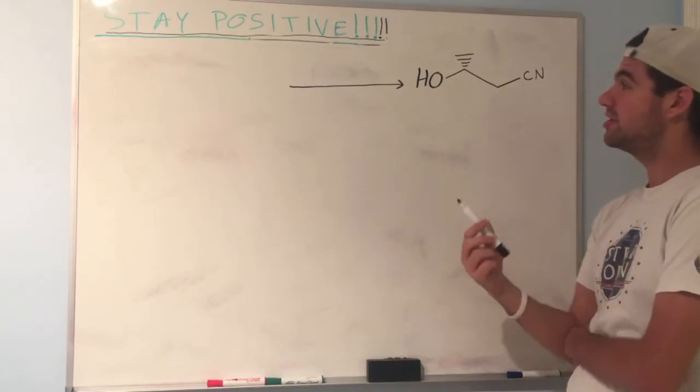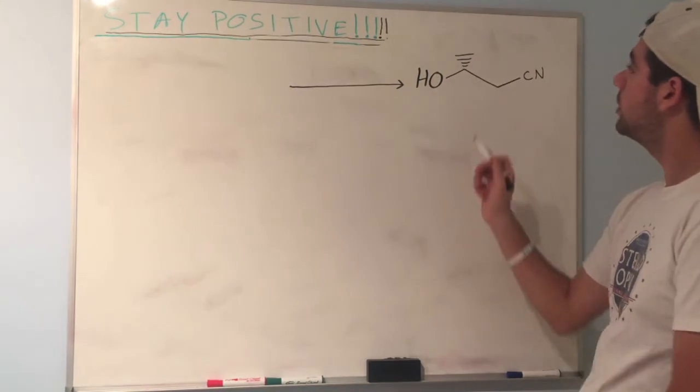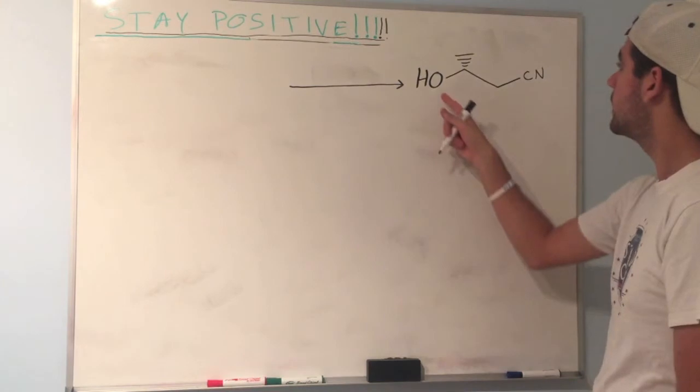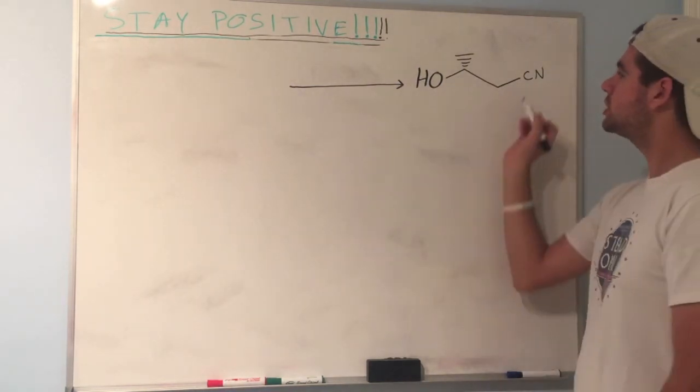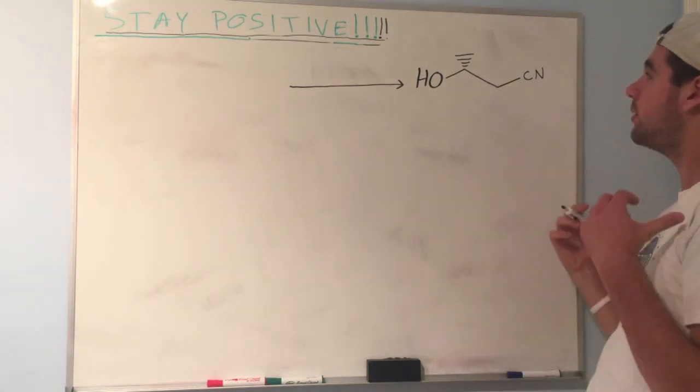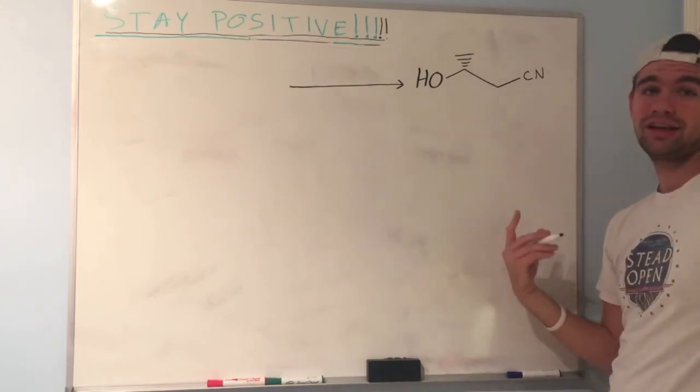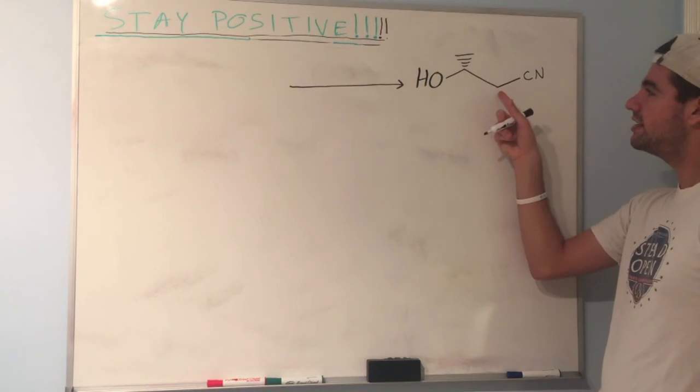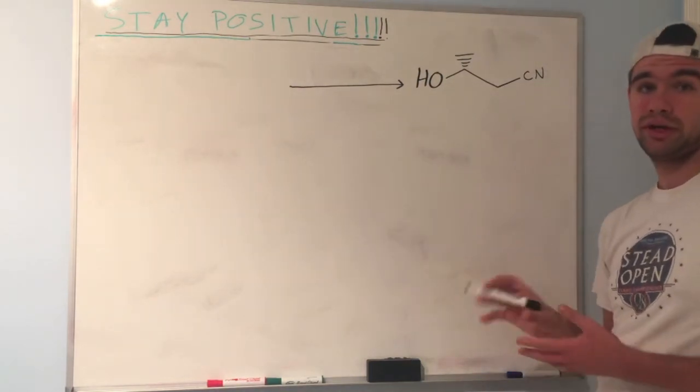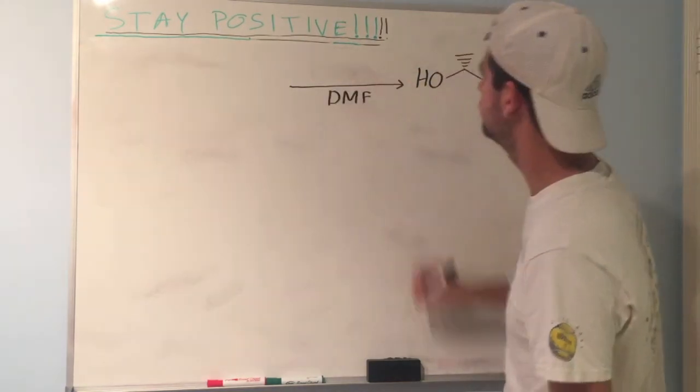We're going to do another retrosynthesis problem. This will be the last problem of the video. Notice we have an alcohol over here - we can assume that used to be the epoxide. We have a CN over here. Which carbon is the CN attached to? It's attached to the less substituted carbon. So working backwards, we can think nucleophilic ring opening because whatever nucleophile we had, most likely CN minus because it's a strong nucleophile, attacked the less substituted carbon. So it's safe to say we're dealing with nucleophilic ring opening territory. In that case, let's choose a polar aprotic solvent like DMF.